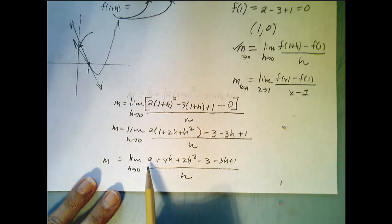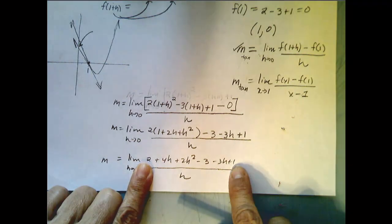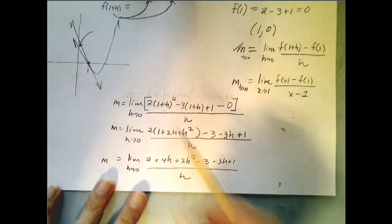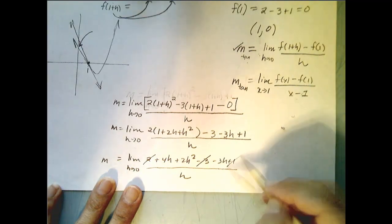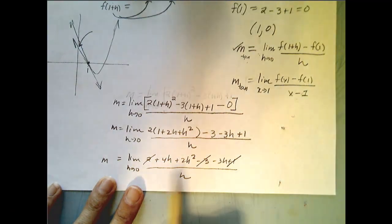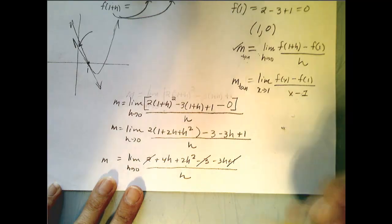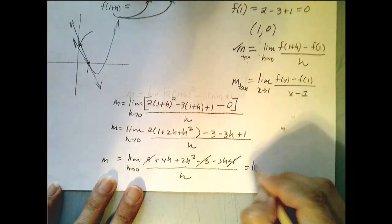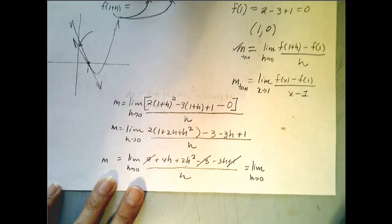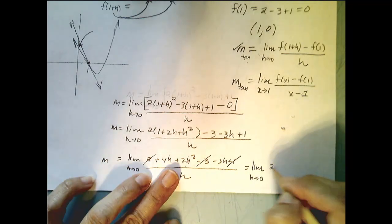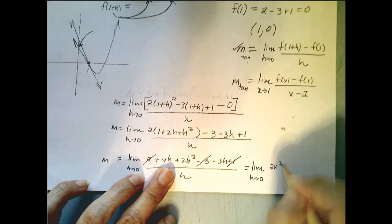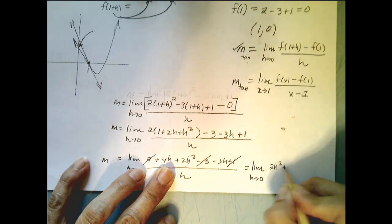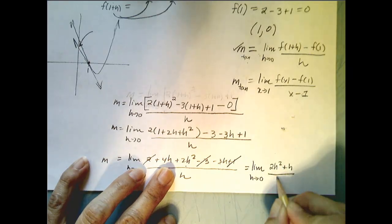If I distribute, I get 2 plus 4h plus 2h² minus 3 minus 3h plus 1 all over h. Now let's see if things cancel. Notice I have a 2 plus 1, which is 3, and a minus 3, so that goes away. Now I have 2h². Let's write this again - equals the limit as h goes to 0 of 2h² plus 4h minus 3h, which is a single h, all over h.